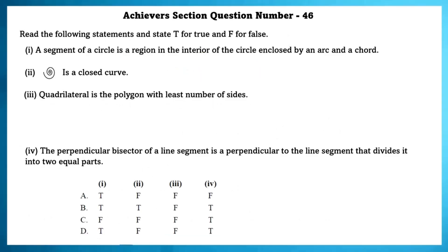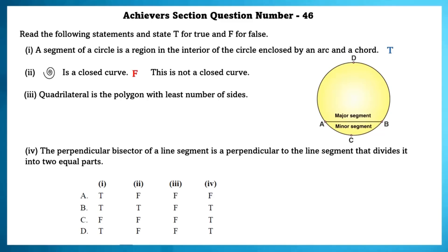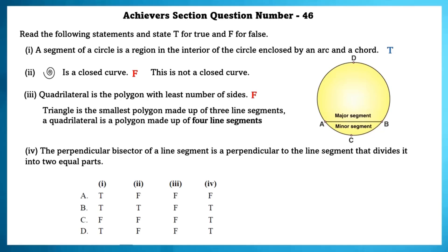Achieve section question number 46. Read the following statements and state T for true and F for false. First, a segment of a circle is a region in the interior enclosed by an arc and a chord — true. Second, a given figure is a closed curve — false. Third, the quadrilateral is the polygon with the least number of sides — false, as a triangle has 3 sides. Fourth, the perpendicular bisector of a line segment is perpendicular to the line segment and divides it into 2 equal parts — true.